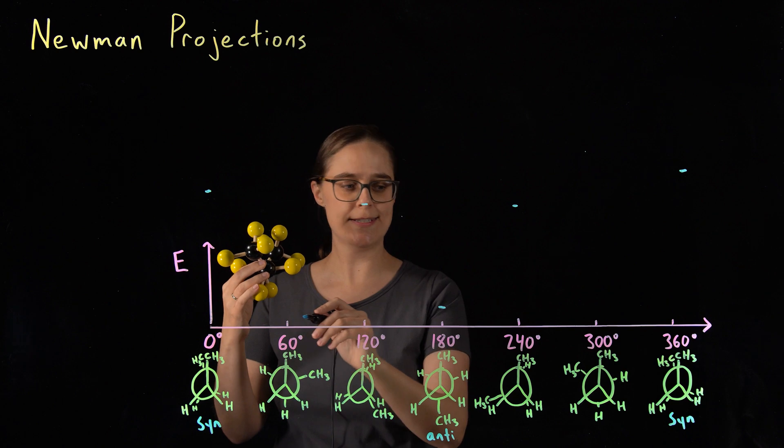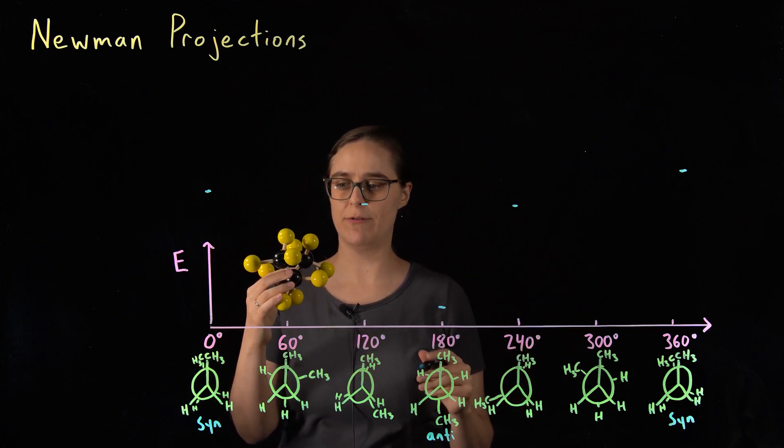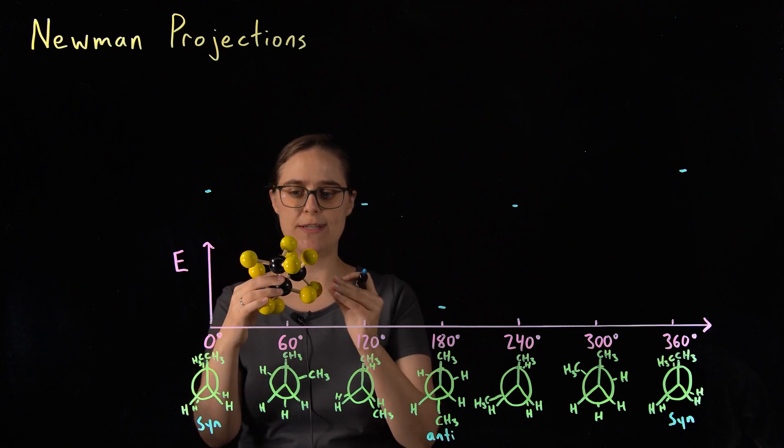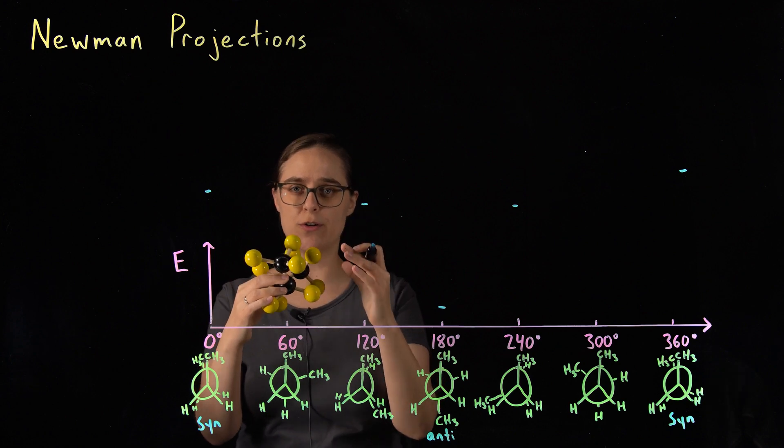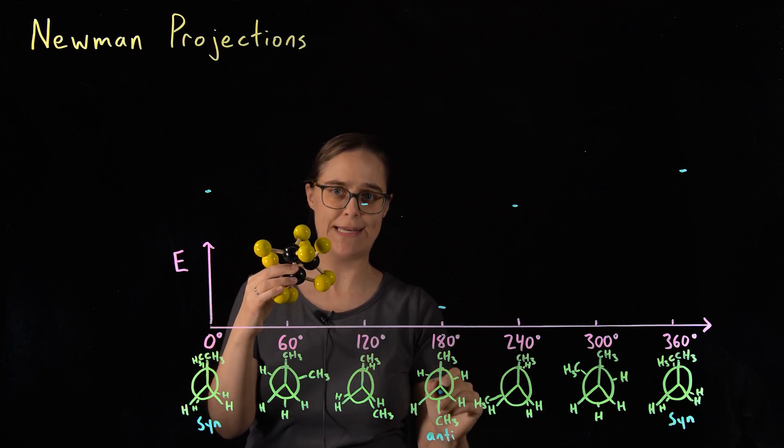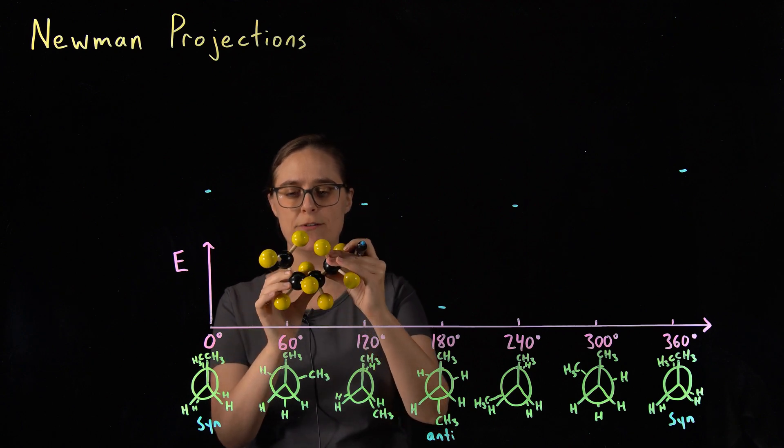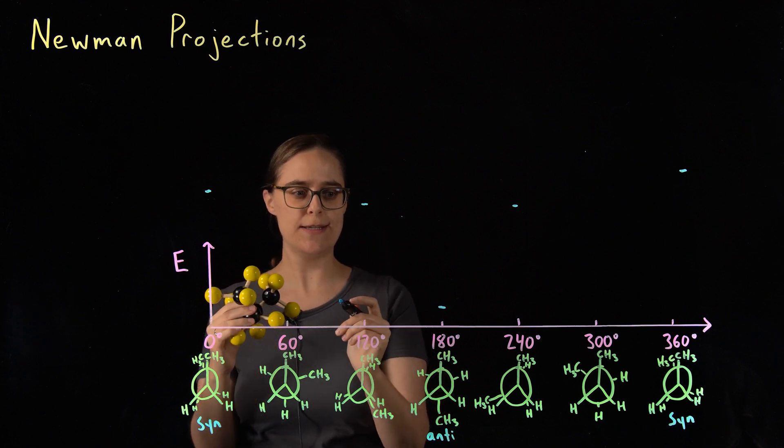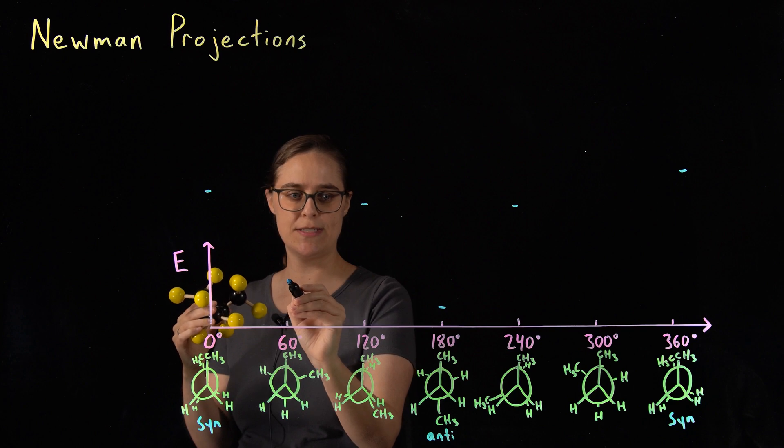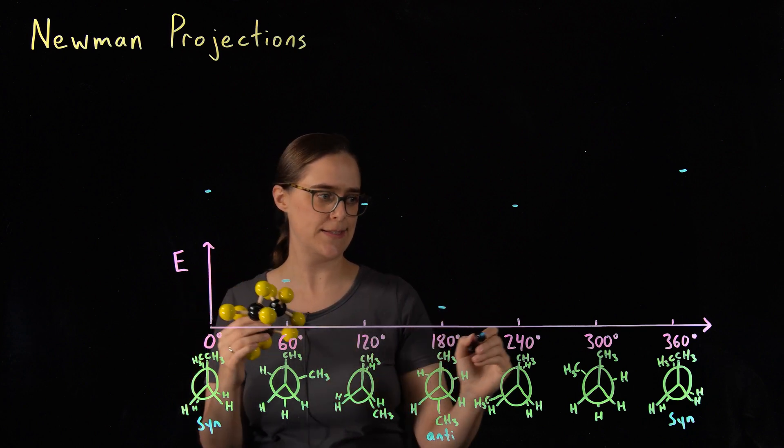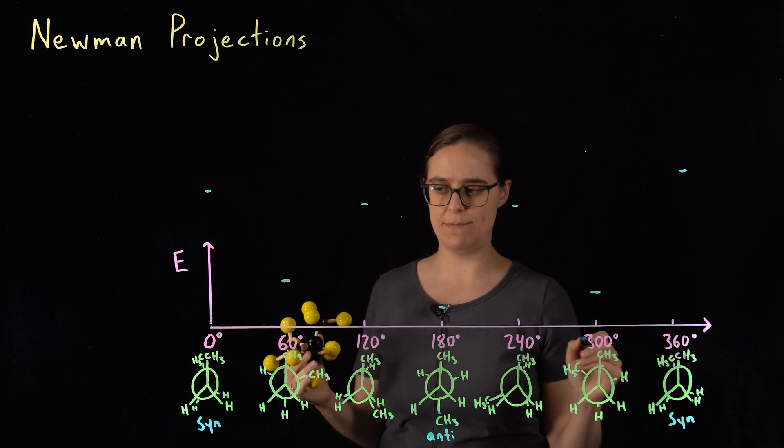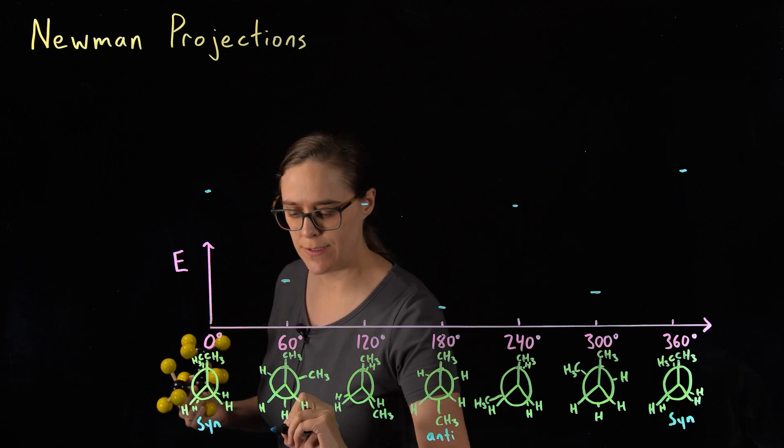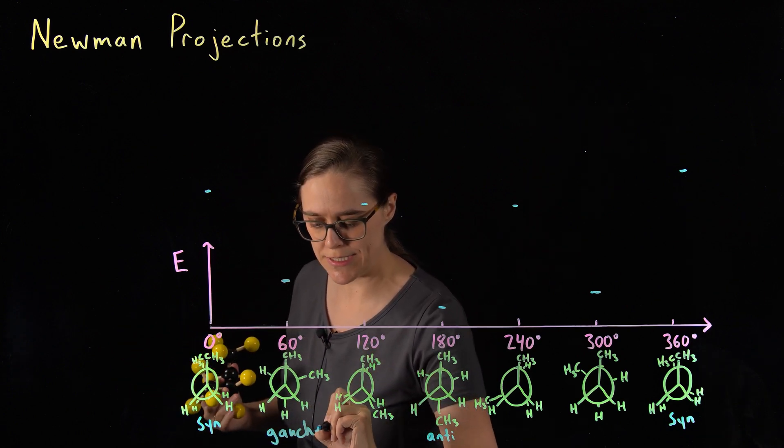Now let's consider the 60 degree and 300 degree staggered conformations. In both of these cases, we're staggered, so it's lower potential energy and more stability. But these two methyl groups are closer to each other than they were in this anti-conformation. If you take a look at the hydrogens on carbons one and four, they are kind of close to each other. So these are still low potential energy, high stability, but they're not as good as this 180 degree angle. They are the same as each other. So these two conformations, this is called gauche. G-A-U-C-H-E, gauche.